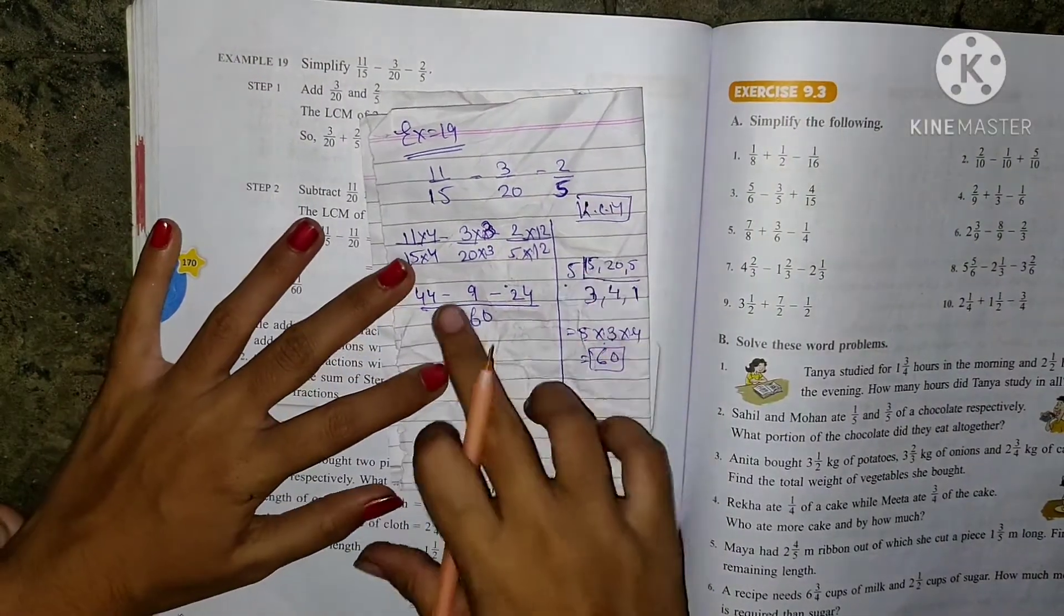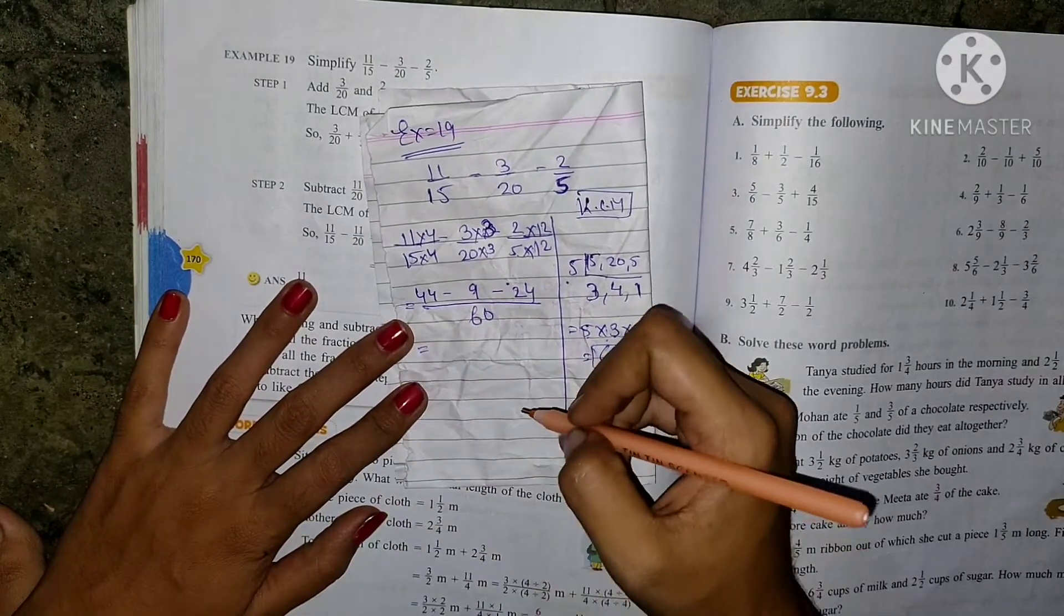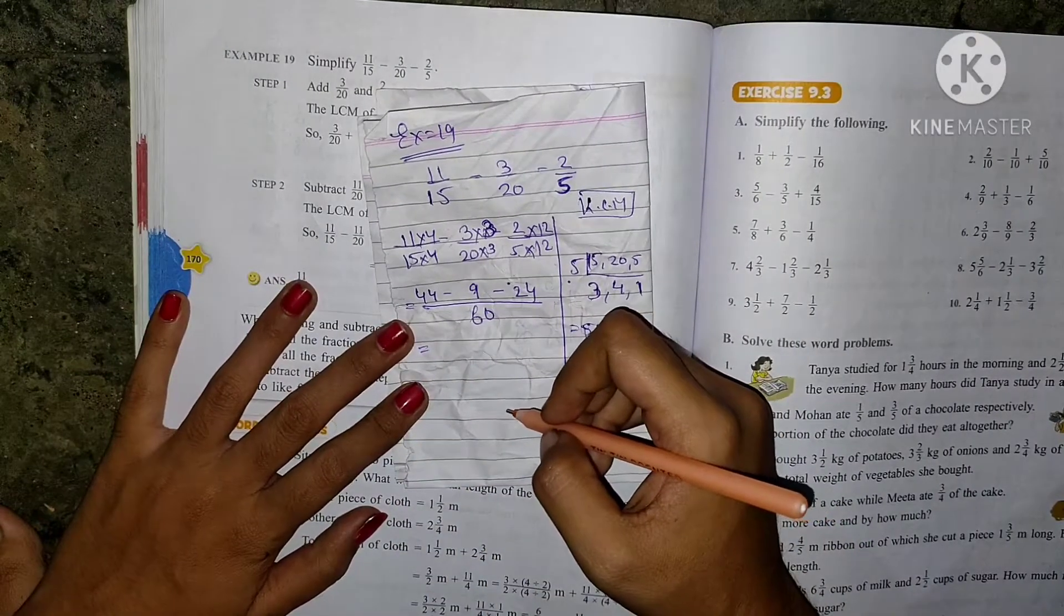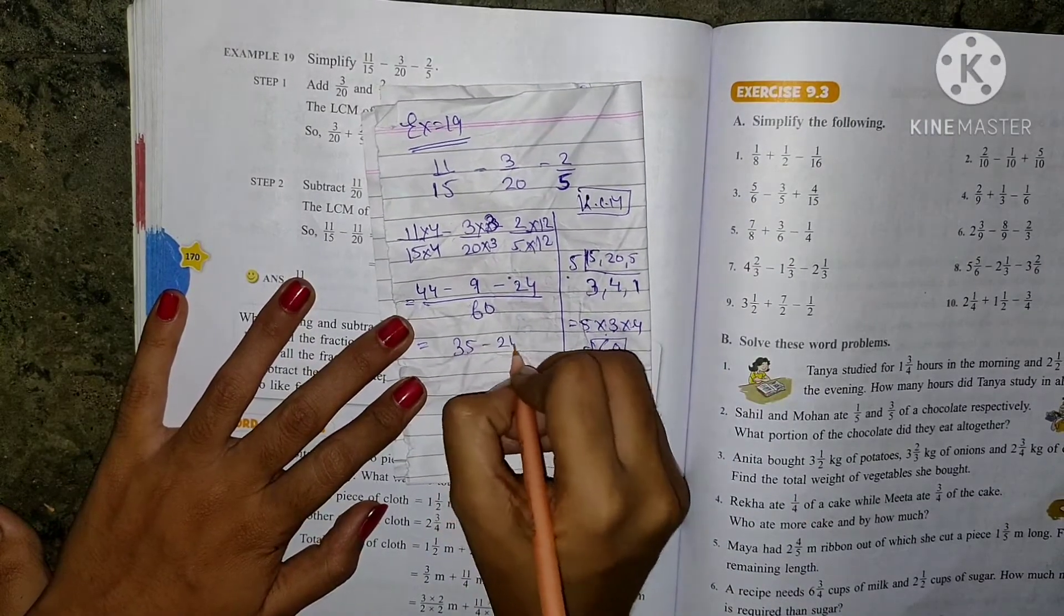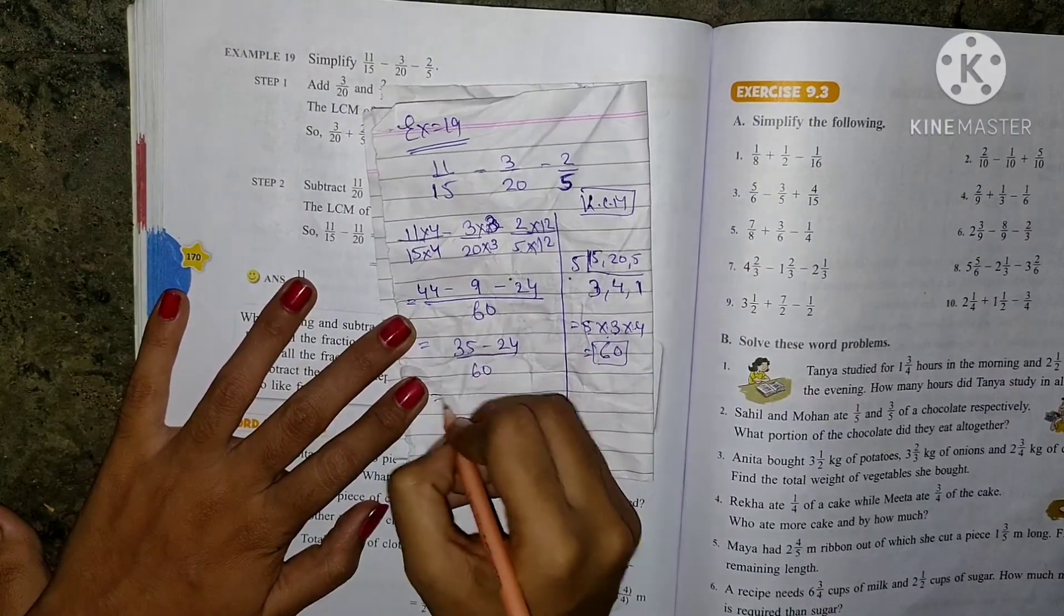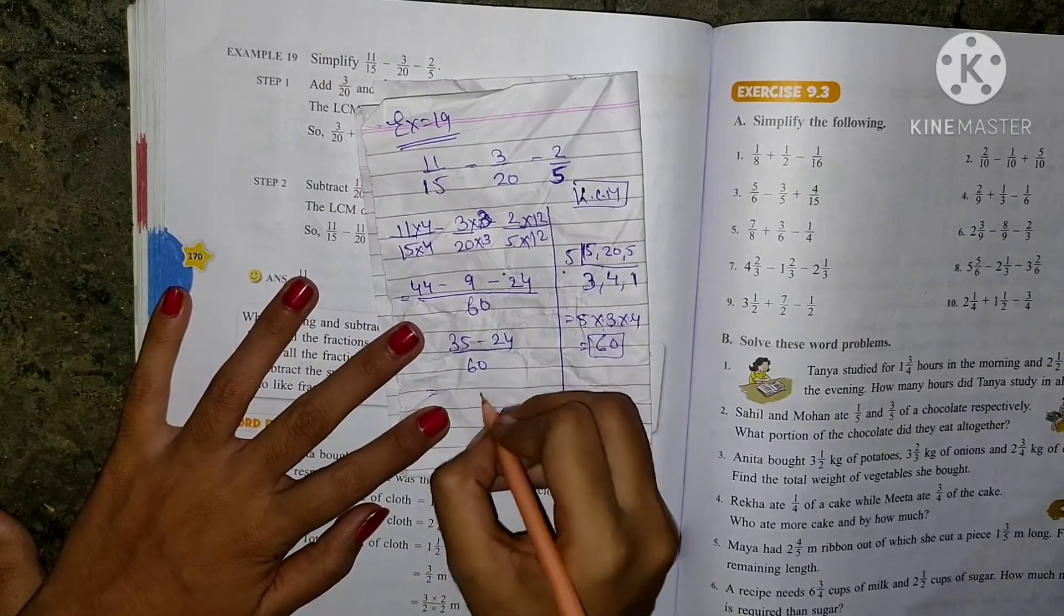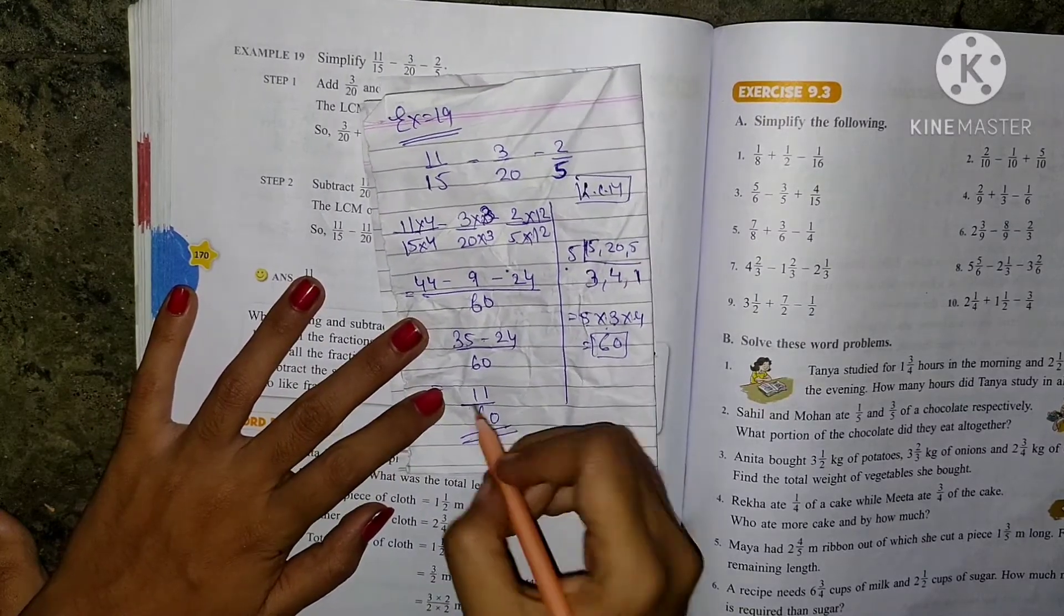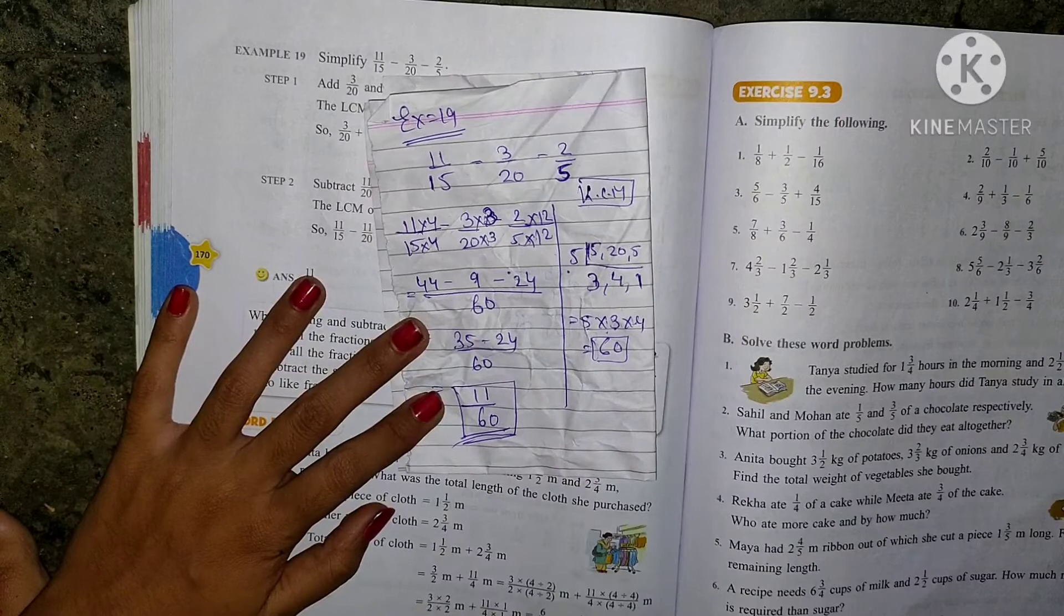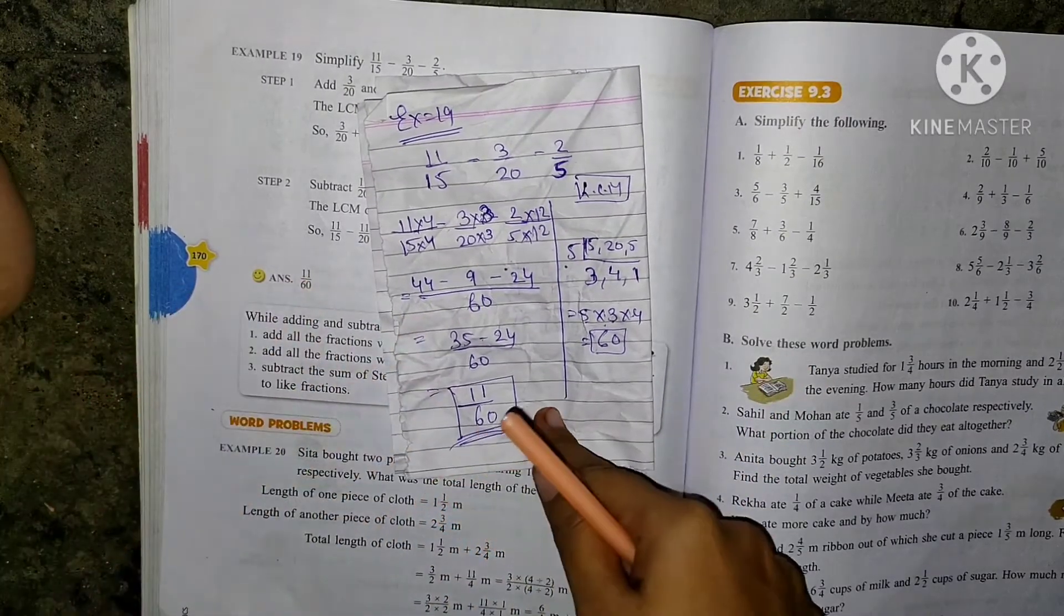Now students, see this. 44 minus 9, how much will come? 35. 35 minus 24 by 60. Now 35 minus 24. From 5, 4 goes, 1 remains. From 3, 2 goes, 1 remains. So your answer came 11 by 60. This is your final answer and you have to solve your sums like that, okay?